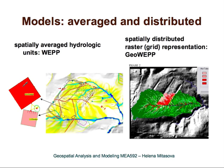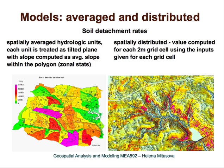You can still get correct results by properly setting up the parameters of the model. This shows a spatially distributed representation of water depth, and another spatially distributed representation from GeoWEPP showing actual rates of erosion — much more detailed than the averaged approach.